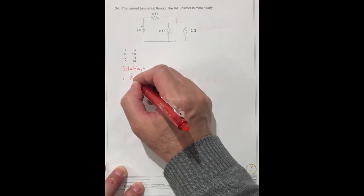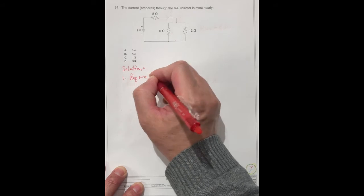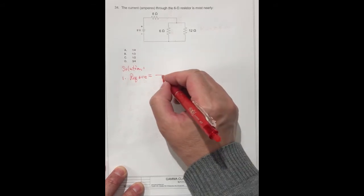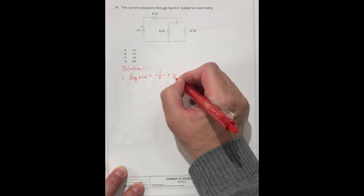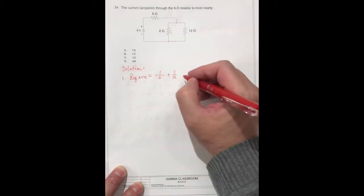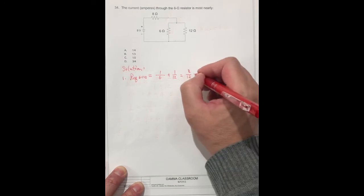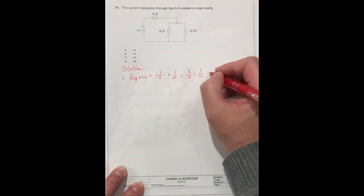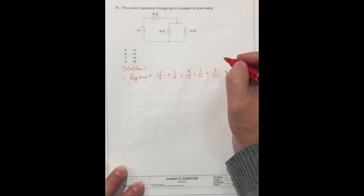The equivalent, 6 parallel 12. This is 6 plus 12, this one. We can get simplified. 12, this one is equal to 12, 3.